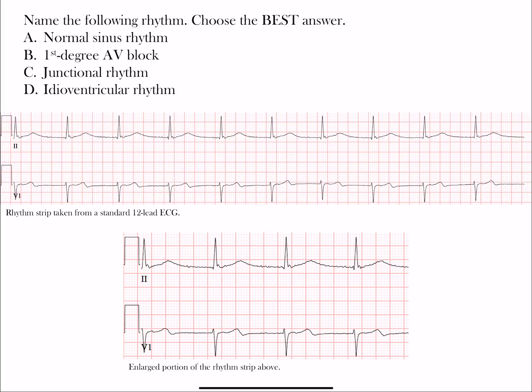Here's our next rhythm challenge. Name the following rhythm and choose the best answer: A) normal sinus rhythm, B) first degree AV block, C) junctional rhythm, or D) idioventricular rhythm. Take a moment, pause the video, go through it, try to choose the best answer, and then we'll walk through this together. Let's look at each of these answer choices and see why the correct answer is correct.